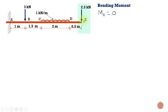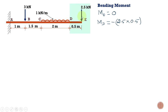At point E, although a 2.5 kilonewton force acts there, the perpendicular distance between the force and the point is zero, so the bending moment at E is 0. At point D, the 2.5 kilonewton force acts downward creating a clockwise moment, which is negative. So the bending moment at D is minus 2.5 multiplied by 0.5 meter, giving minus 1.25 kilonewton-meters.